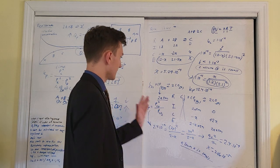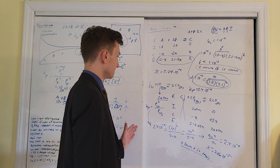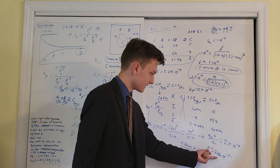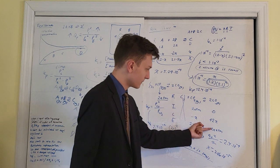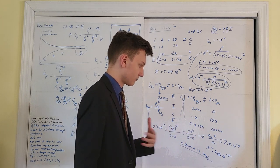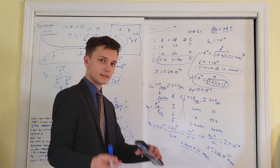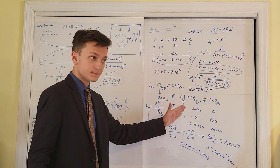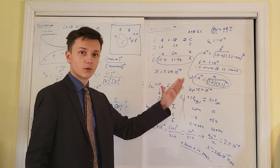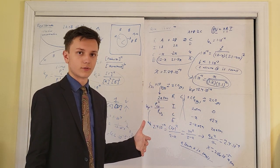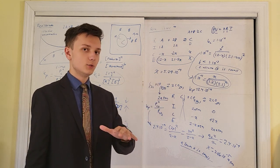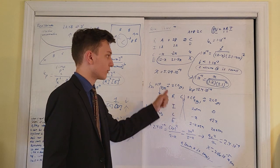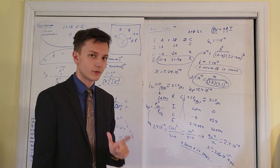With x solved, the partial pressure of CO2 at equilibrium is 2 minus x, and the partial pressure of CO at equilibrium is 2x — write those values in atmospheres. Since carbon is a solid, its concentration is not changing with respect to the reaction, so you don't write a concentration for it. Take every opportunity to demonstrate to the reader you know your stuff by explaining why carbon doesn't participate in the K expression.